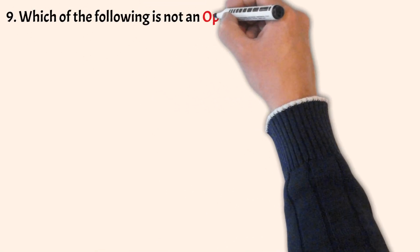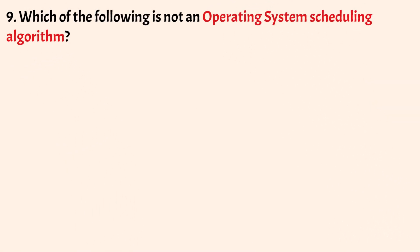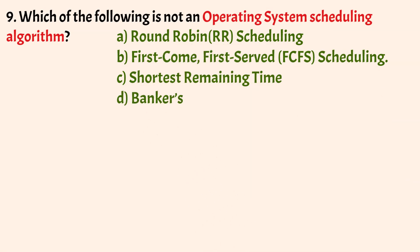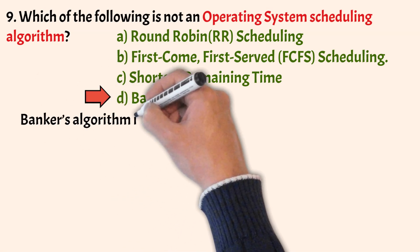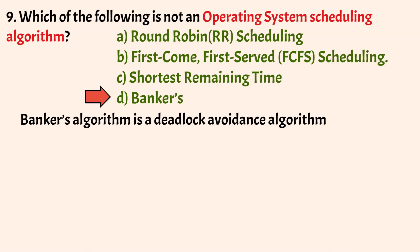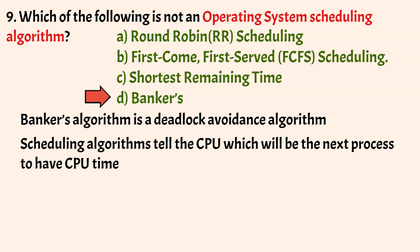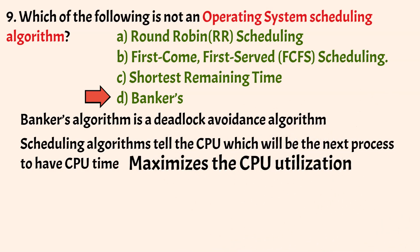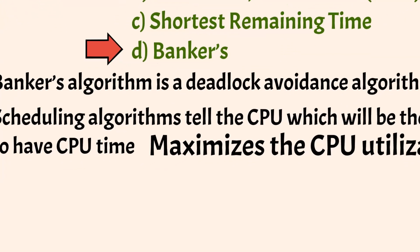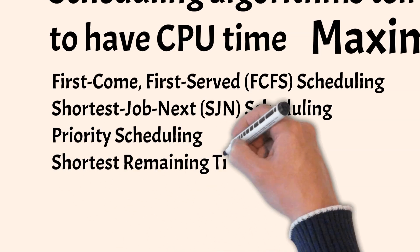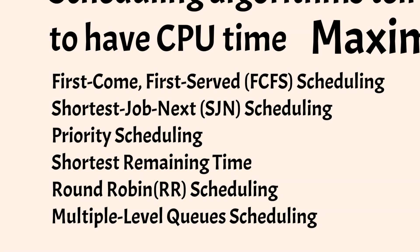Which of the following is NOT an OS scheduling algorithm? Options: Round Robin scheduling, First-Come First-Served scheduling, Shortest Remaining Time, Banker's Algorithm. The correct answer is Option D — Banker's Algorithm, which is a deadlock avoidance algorithm, not a scheduling algorithm. Scheduling algorithms tell the CPU which process gets CPU time next. The main objective is to maximize CPU utilization. Widely used scheduling algorithms include FCFS, Shortest Job Next, Priority Scheduling, Shortest Remaining Time, Round Robin, and Multi-level Queue scheduling.